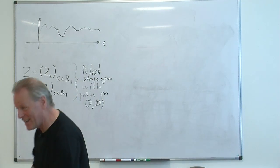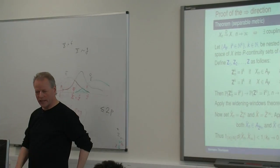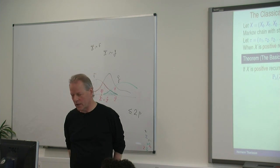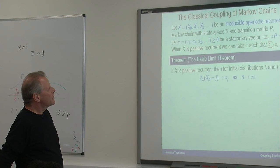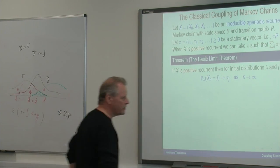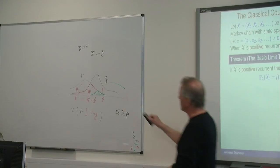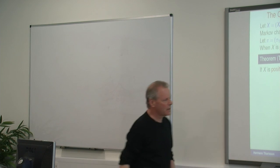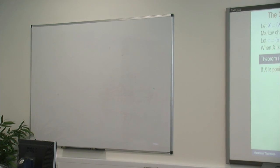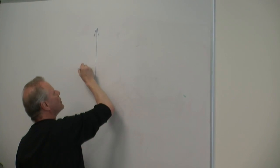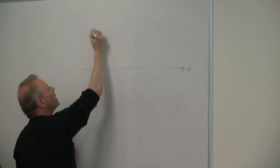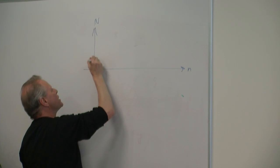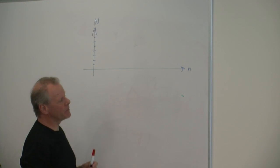Now I am going to stop here and go to what I actually intended to do. I was going into the general theory too early. I want to show you the classical coupling of Markov chains. You probably heard about it. For convenience, let the state space be N — a countable state space. It could be finite also, not necessarily infinite.